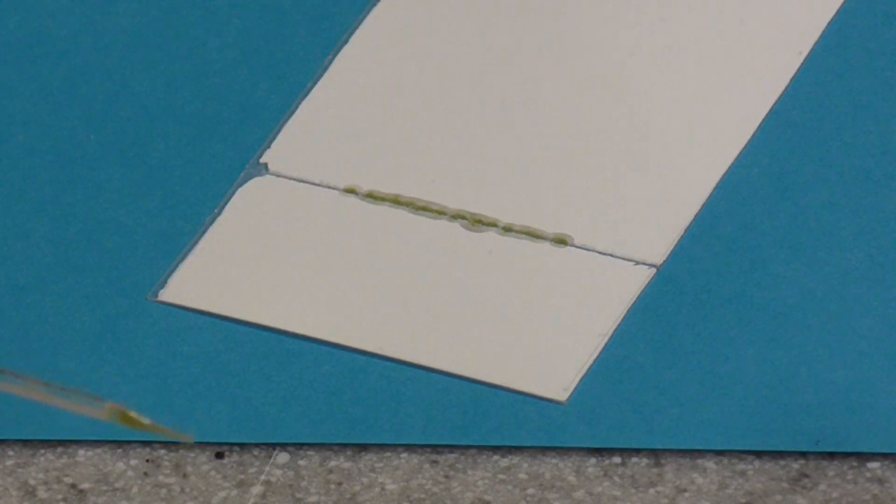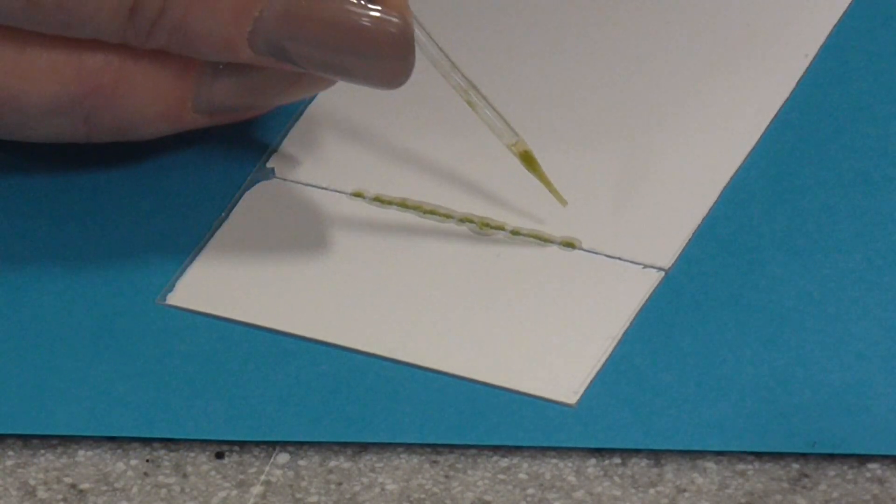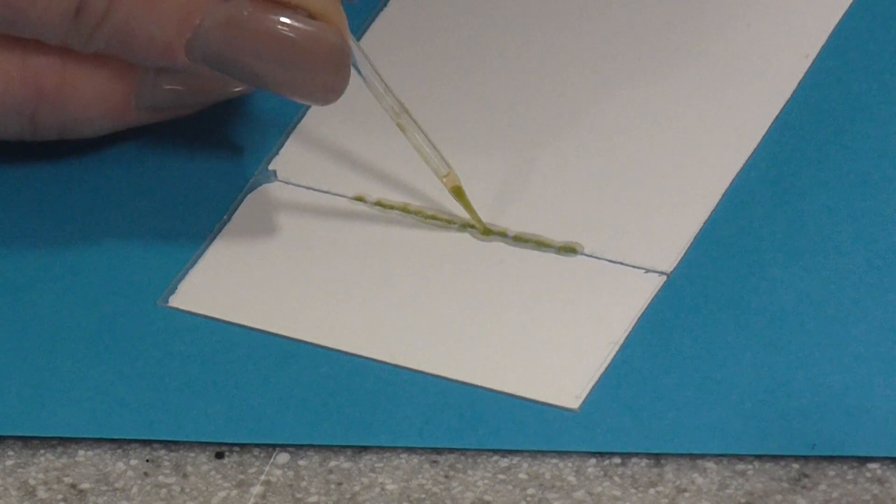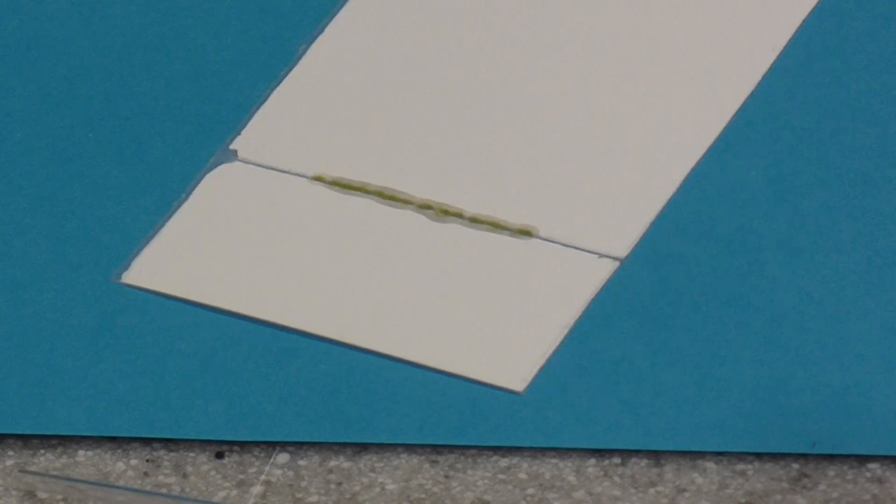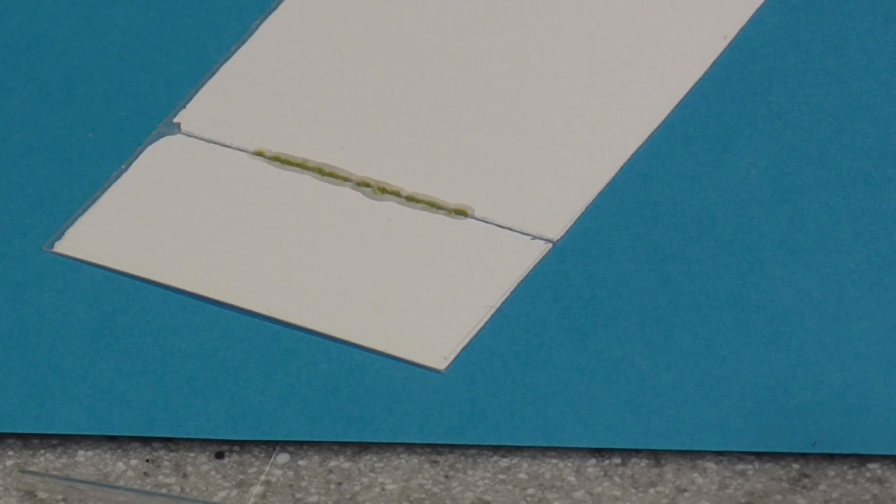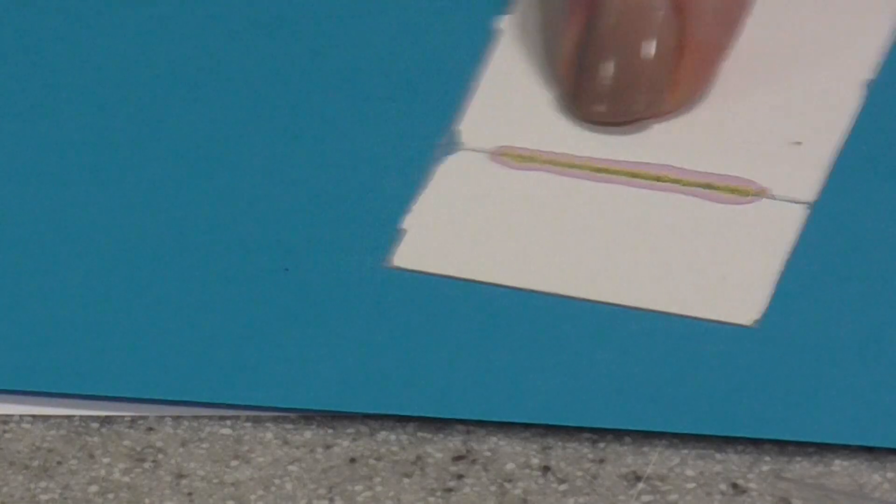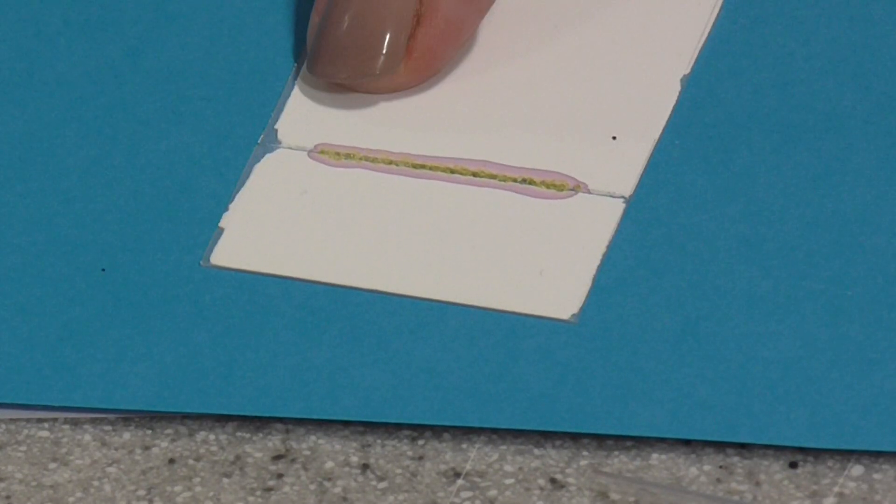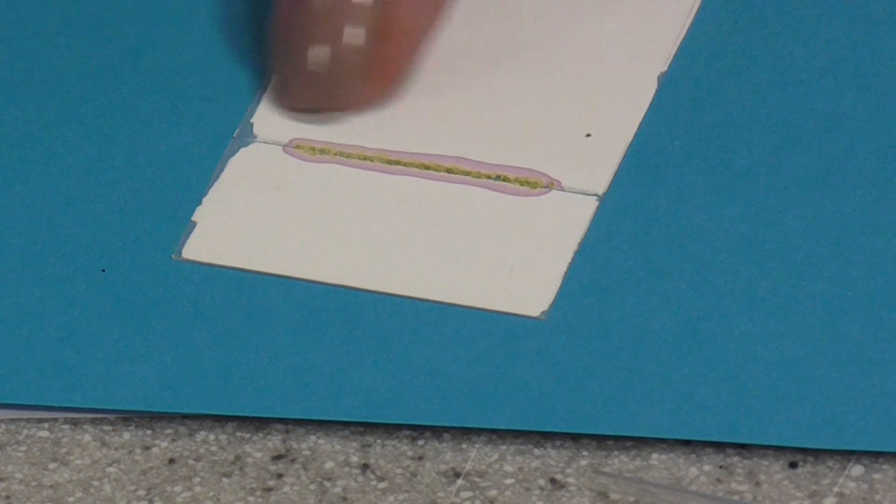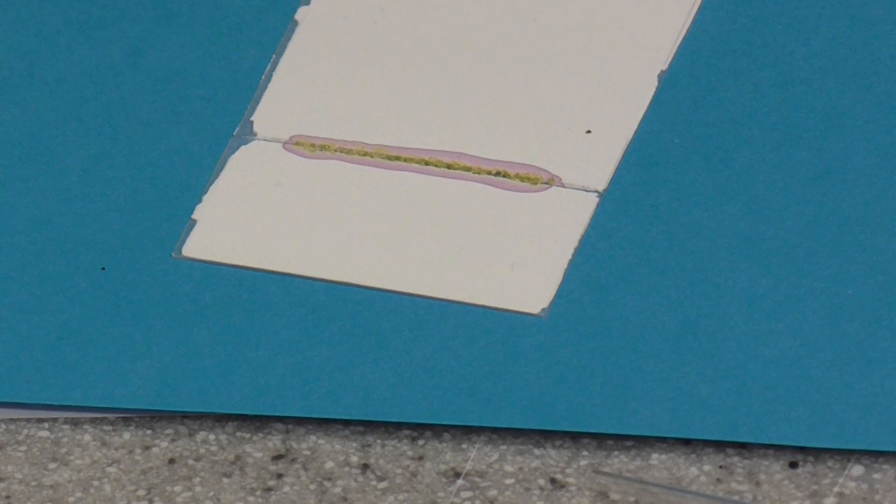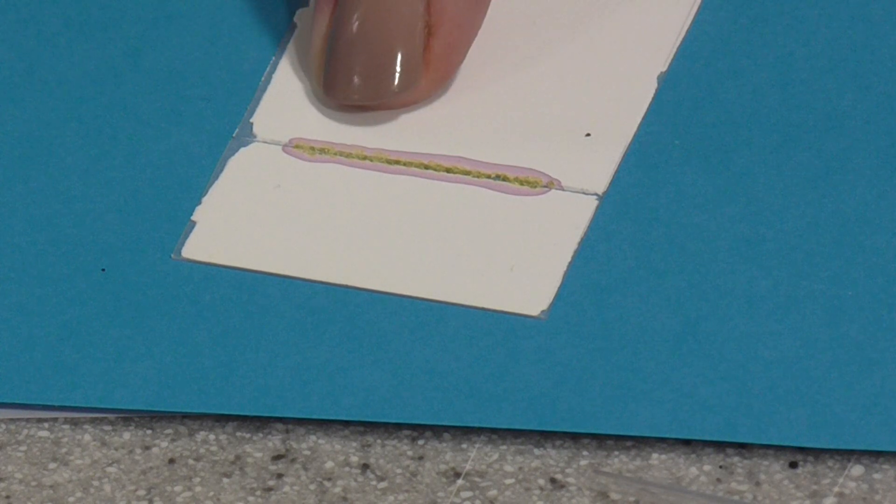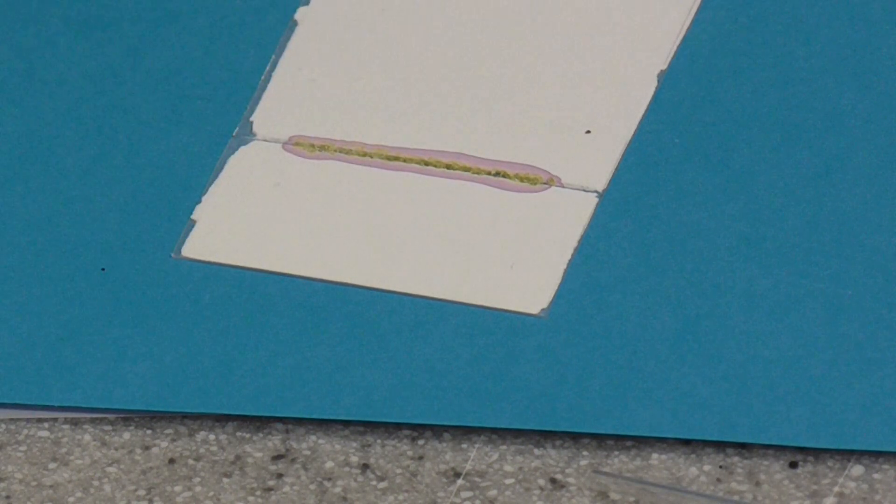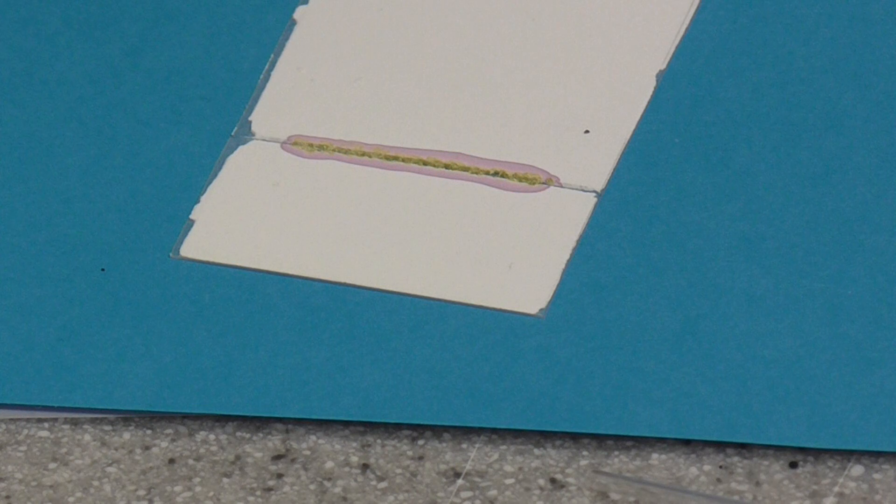You need to let it dry and then repeat the same process so that you're building up a very concentrated line of leaf extract at the bottom of your TLC plate. Here is one that I started making earlier. I've done this about six times to get a very concentrated line and allowed it to dry a little bit between each application. You need to be very patient and do this maybe 30 times so that it's very concentrated.